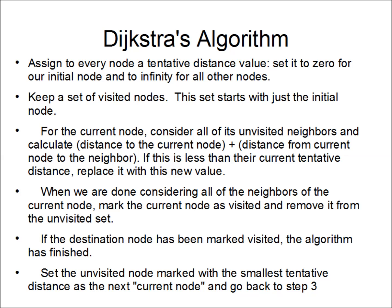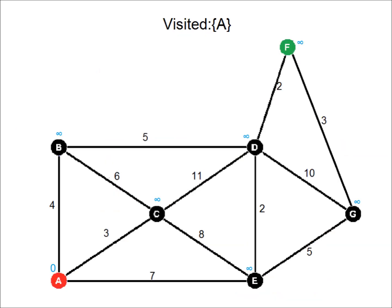This algorithm may seem kind of complicated right now, so let's see how it works on a graph. Here's our weighted graph. A is our initial state and F is our goal state. A has been marked red and it's been added to our visited list. Also notice that we've added tentative distances to all of the nodes — it's zero at A, because that's our initial state, and it's infinity at all of the other nodes.